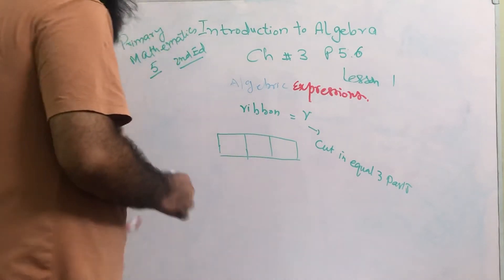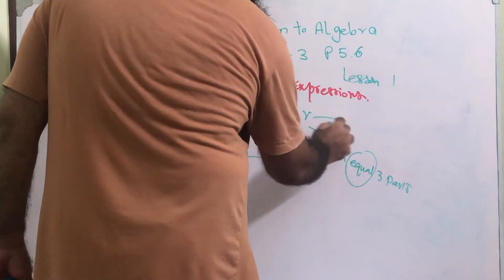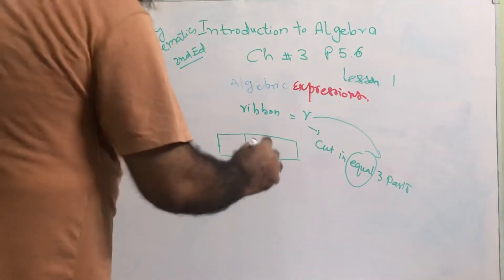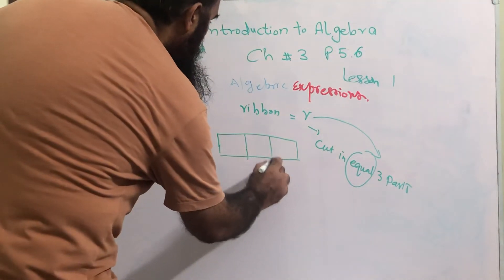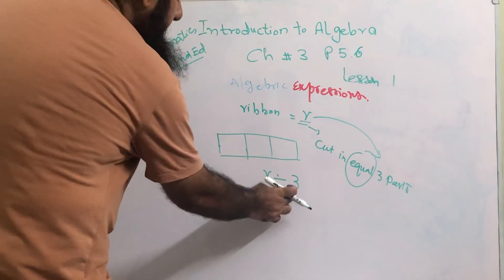When anything is cut in equal parts, it means that thing is divided into three parts. So in algebraic expression we say r, this was a total, divided by three. It is divided into three parts.